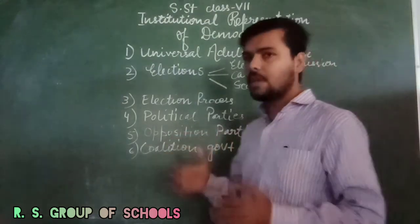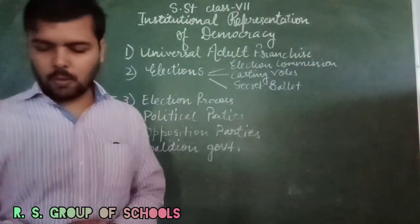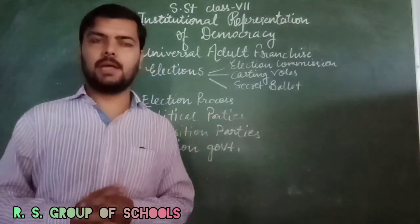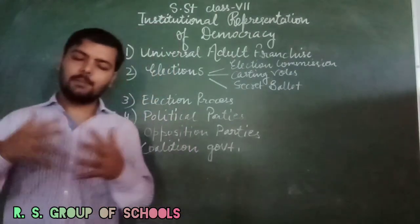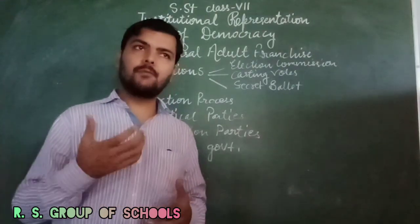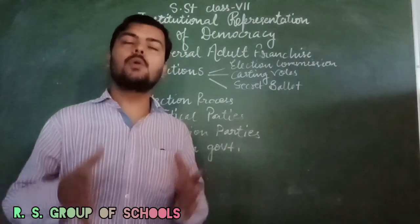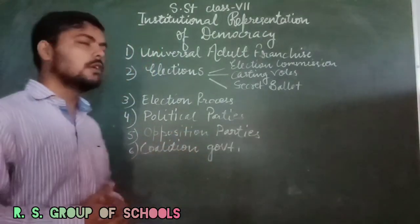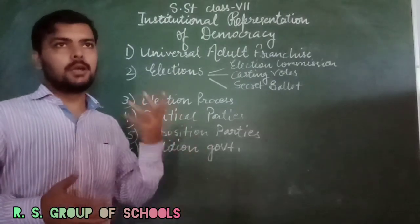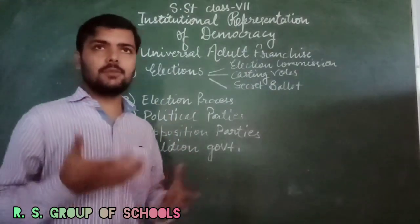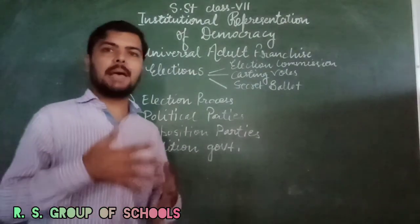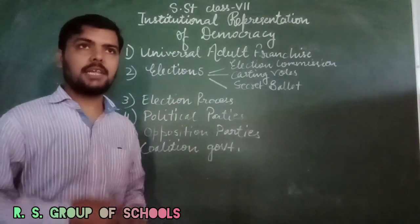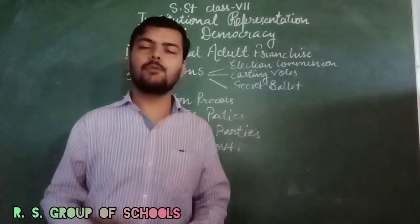If we talk about coalition form of government — coalition government is what happens when no single party is able to win a majority, so two or more parties come together and form the government, and run that state or territory together. This type of government is called a coalition government, which is formed by the coordination and balance of both ruling parties and opposition parties. So this was the chapter explanation of Institutional Representation of Democracy that I have explained to you in this video. Thanks so much for watching, have a nice day, students.